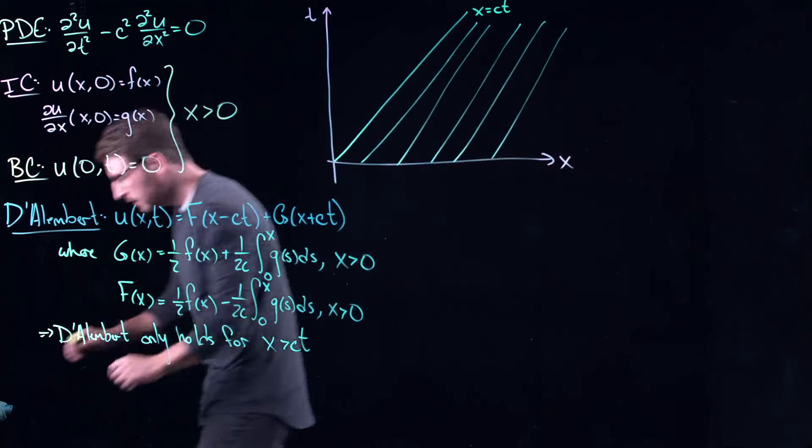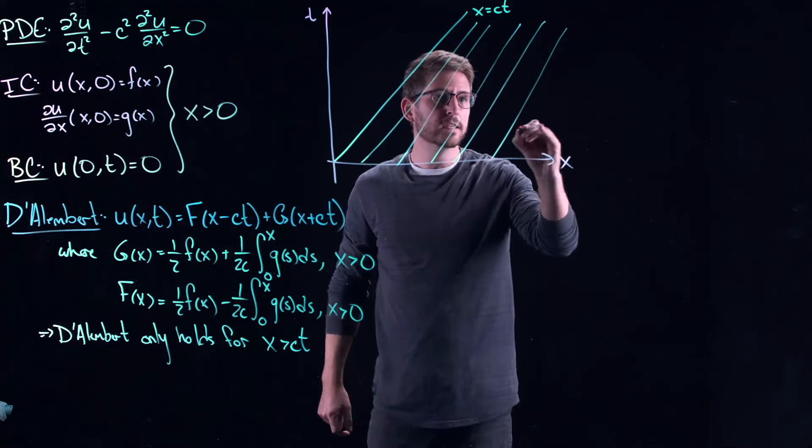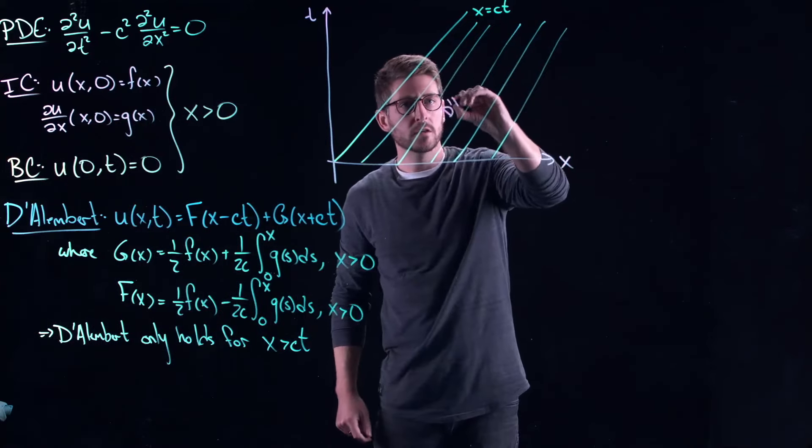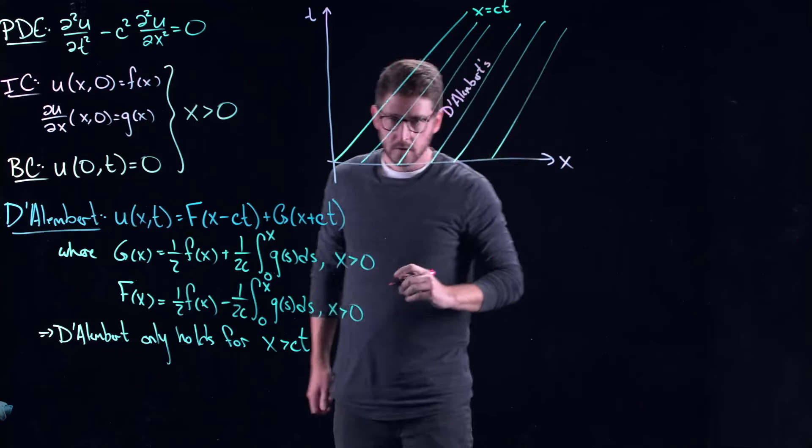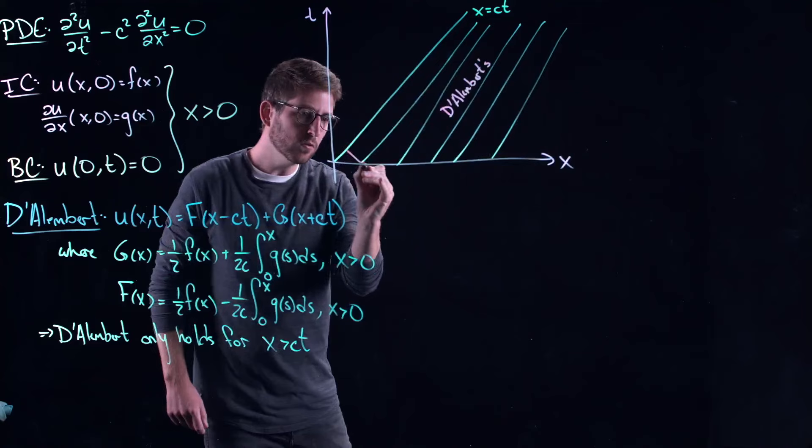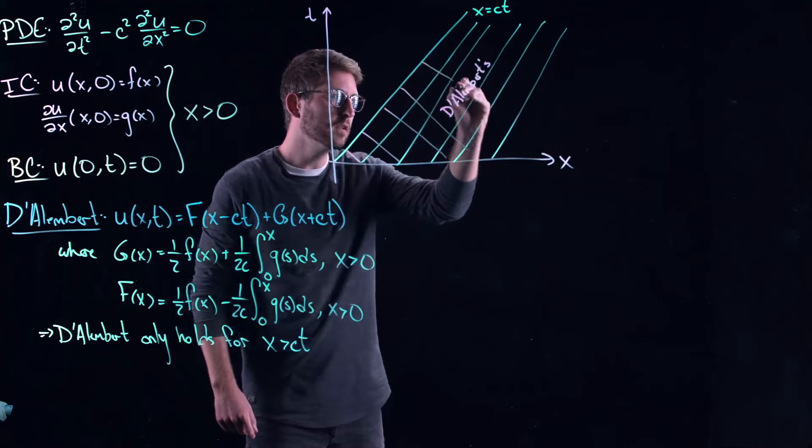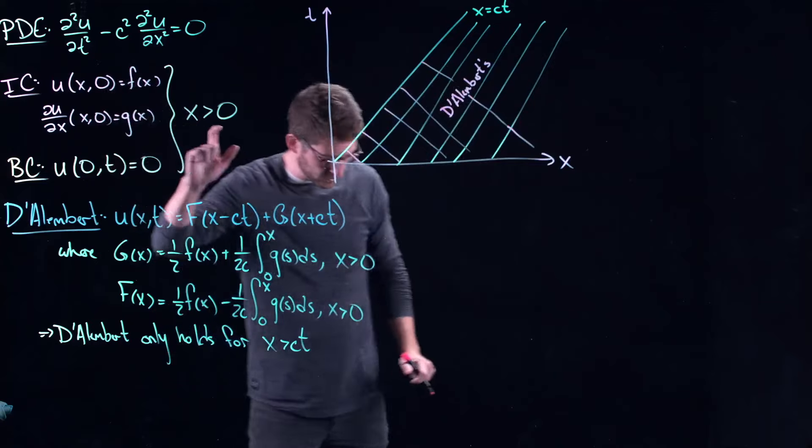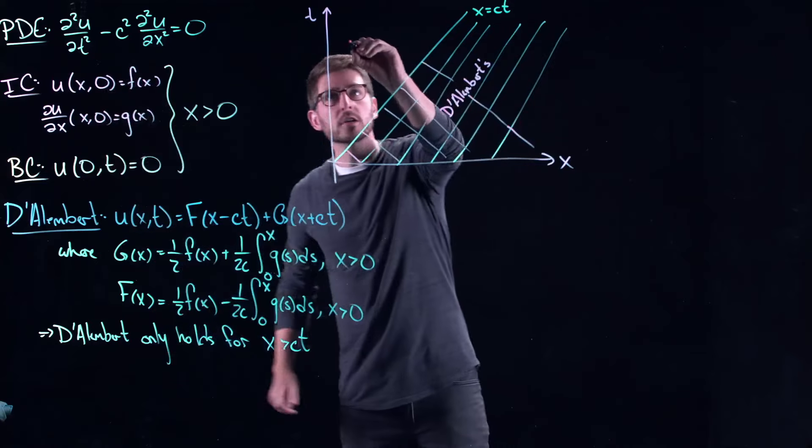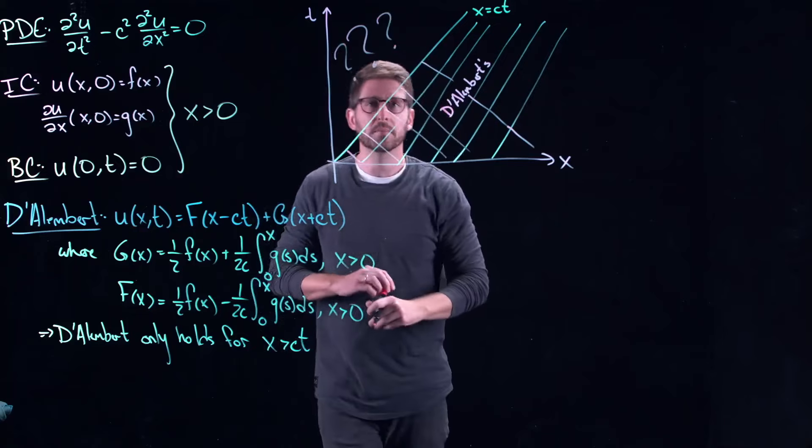And then, down here you have the D'Alembert solution. However, there are also waves that are traveling up this way as well. Because this is the wave equation, we have backwards and forwards propagation through space. But the question is, what is happening up in here?